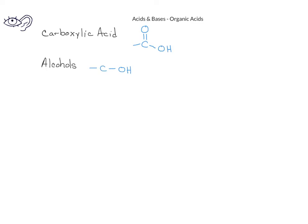A third type of organic acid is known as a protonated amine compound. Protonated amines are compounds in which a nitrogen is bonded to a carbon atom, and that nitrogen is also bonded to a hydrogen. It's important to recognize that the nitrogen actually has a positive charge on it, because while most nitrogens have three bonds, a protonated amine has an extra bond to a hydrogen. So in this case, the nitrogen has three bonds to hydrogens and one bond to carbon, giving the nitrogen a positive charge due to the extra hydrogen ion or proton.